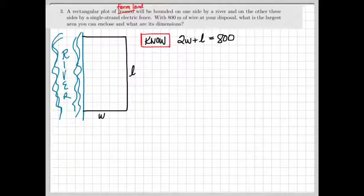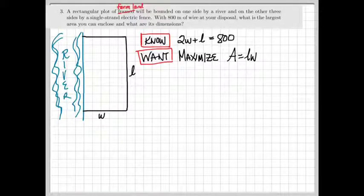We know that 800, the total length of the fence, has to equal 2w plus L. We're asked to find the maximum area that can be enclosed, so we want to maximize area, which is length times width.